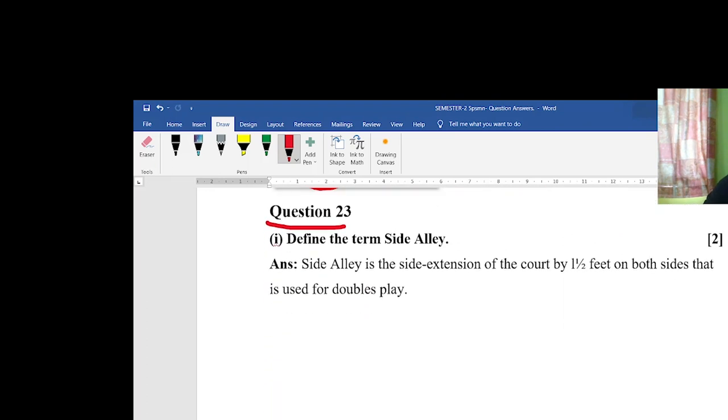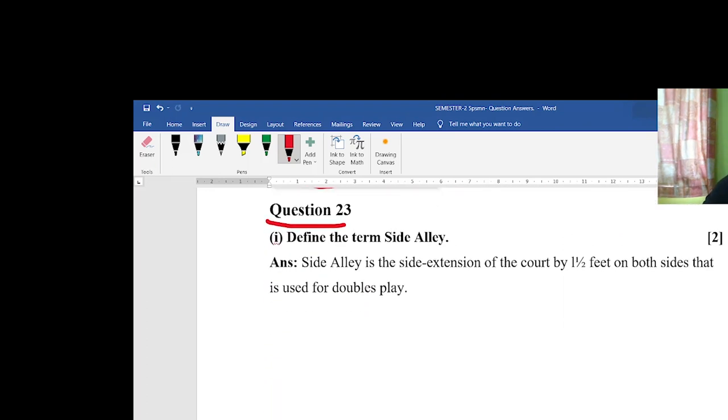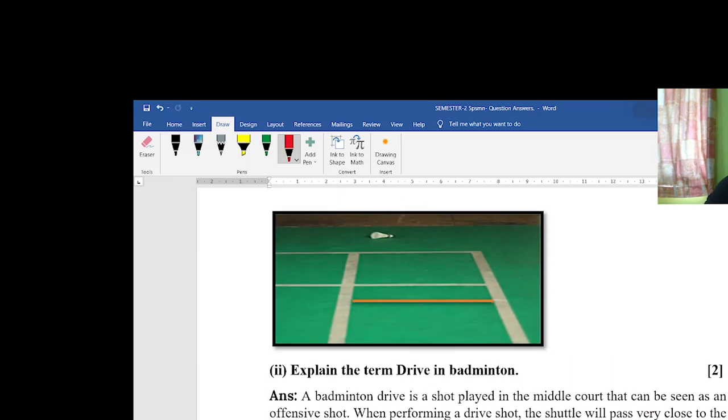Next question: Define the term side alley. Very important question. Side alley is the side extension of the court by one and a half feet on both sides that is used for doubles play. As you can see in this picture, it is very clear. This extended part is called side alley.